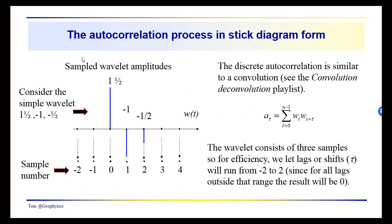Here we have the autocorrelation function. We're going to take a look at a simple wavelet or waveform consisting of three values: 1, 1.5, and minus 1 — shown here in stick form. We could just write this as a series of numbers. The sample numbers run from 0, using 0 to represent the location of the first sample, so samples 0, 1, 2, 3, and 4, and backward in time minus 1 and 2. Outside the range shown, all values would be equal to 0.